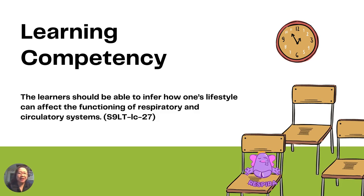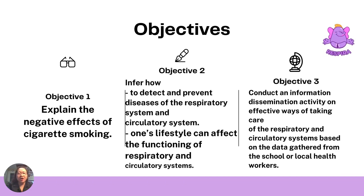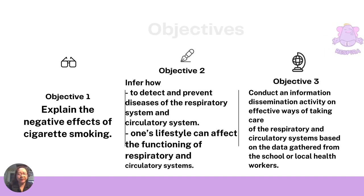Learning competency: The learner should be able to infer how one's lifestyle can affect the functioning of the respiratory and circulatory systems. Objectives: 1. Explain the negative effects of cigarette smoking. 2. Infer how to detect and prevent diseases of the respiratory and circulatory system. 3. Infer how one's lifestyle can affect the functioning of these systems. 4. Conduct an information dissemination activity on effective ways of taking care of the respiratory and circulatory systems based on data gathered from the school or local health workers.